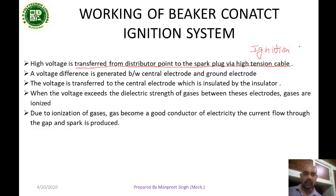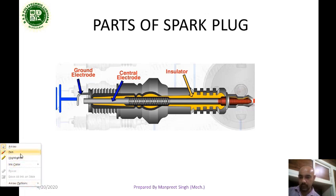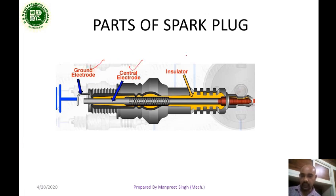Next, the voltage is transferred from the distributor points to the spark plug by high tension wires or ignition cables. A voltage difference is generated between the central electrode and ground electrode of the spark plug. The spark plug has three parts: the central electrode, the ground electrode, and the insulator material which insulates the central electrode.